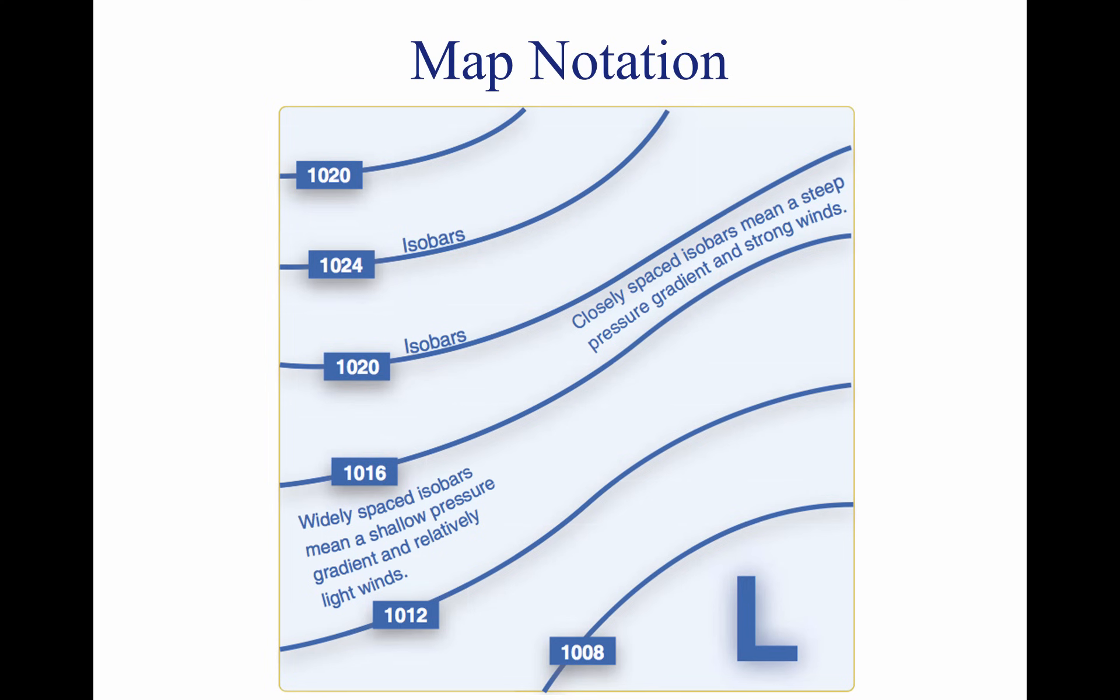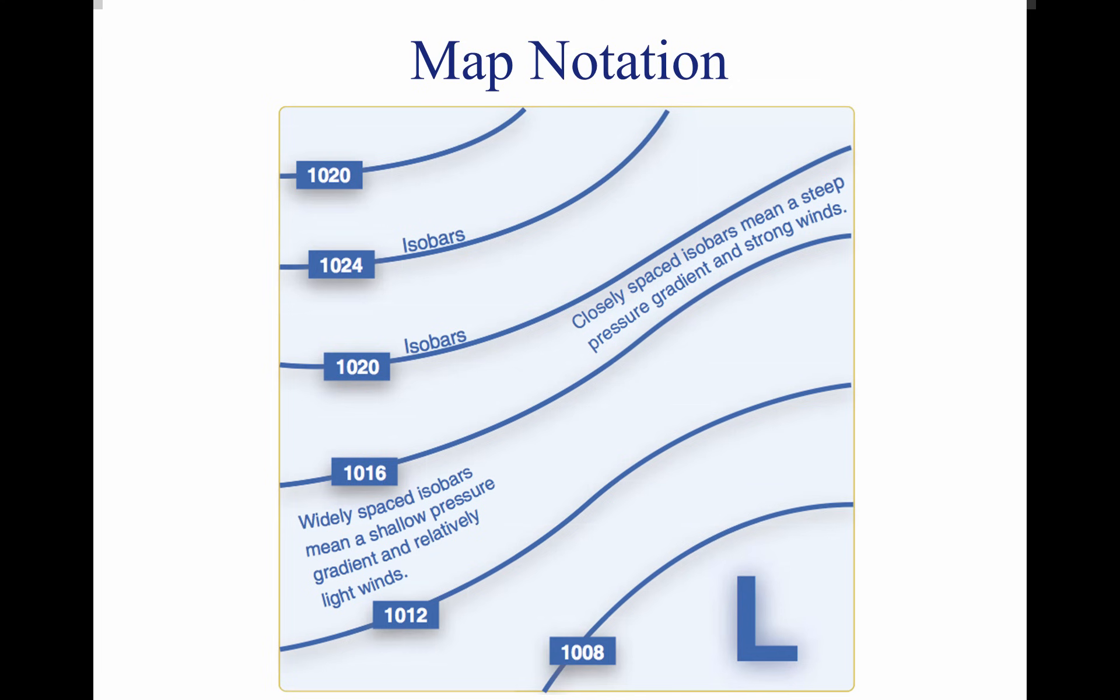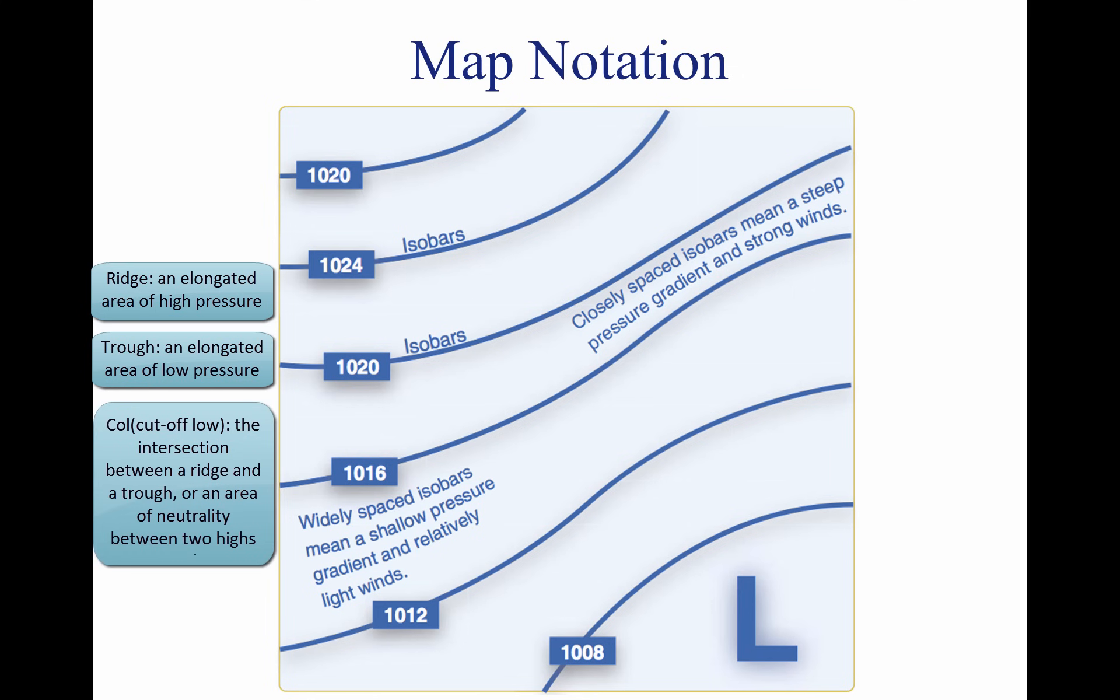Isobars help identify low and high pressure systems, as well as the location of ridges, troughs, and cutoff lows. A high is an area of high pressure surrounded by lower pressure. A low is an area of low pressure surrounded by higher pressure. A ridge is an elongated area of high pressure, and a trough is an elongated area of low pressure. A col is the intersection between a ridge and a trough, or an area of neutrality between two highs or two lows.